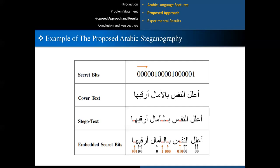The next letter is Nun, which accepts Keshida, and according to the proposed secret bit pattern, this character can only embed the bit sequence 010. Consequently, we will only hide the zero bit in this position too. At this point, we have successfully embedded four bits of the secret data. The next three bits to be hidden are 010, and the next letter is Fa. In this case, the embedding algorithm picks up the next three secret bits, 010, instead of one bit. In the same manner, the proposed embedding algorithm will process the rest of the secret bits.